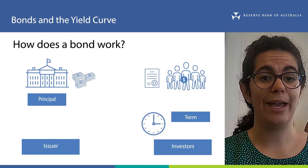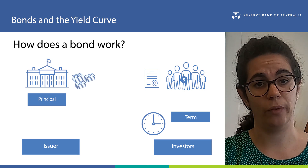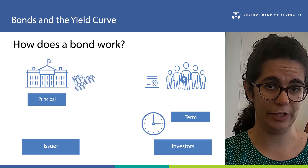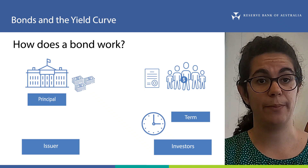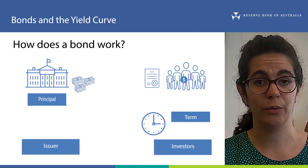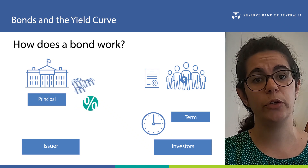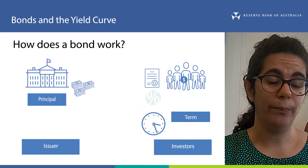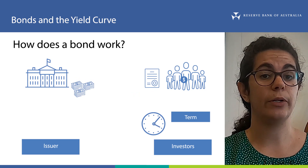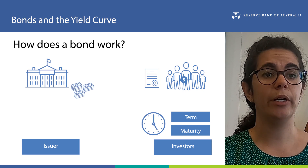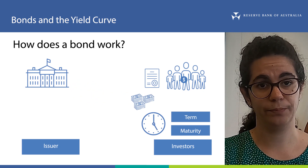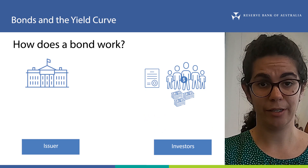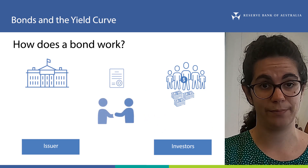For now, the investors own the bond and it's an asset for them. In return for borrowing this money, the issuer promises to pay some interest, which we measure as an interest rate, to the bond's owner. At the end of the bond's term, which we call the maturity of the bond, the issuer agrees to pay back the principal. When this happens, the agreement is finished and the bond ceases to exist.